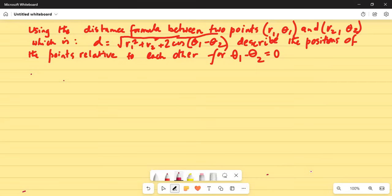Using the distance formula between two points r1 theta1 and r2 theta2, which is d equals square root of r1 squared plus r2 squared plus 2 cosine theta1 minus theta2. Describe the position of the points relative to each other for theta1 minus theta2 equal to zero.